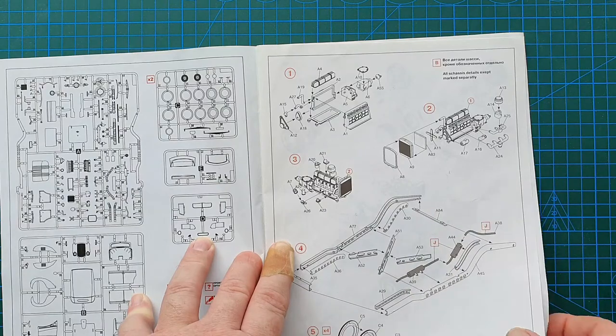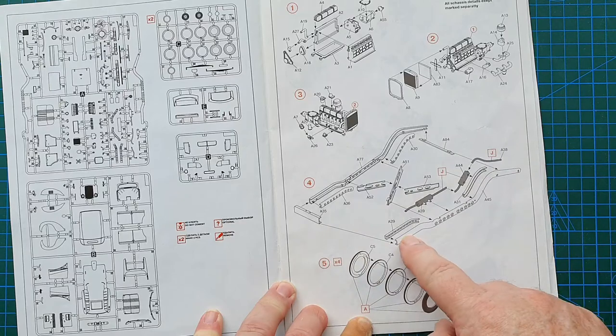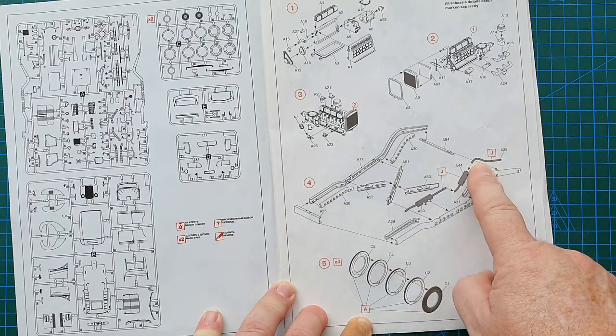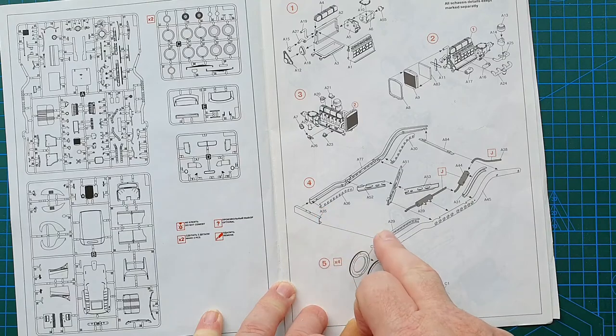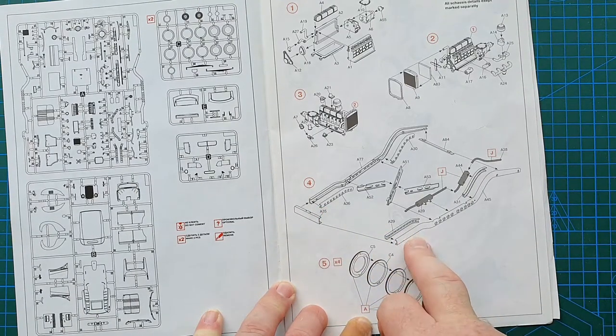So then we move on to the chassis, which unfortunately is, as you can tell, quite a few parts. It's not a single piece chassis. So there is scope for getting this out of shape. So you have to be very careful putting this together.